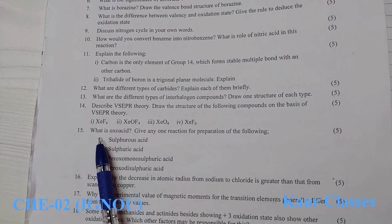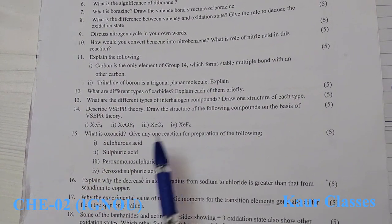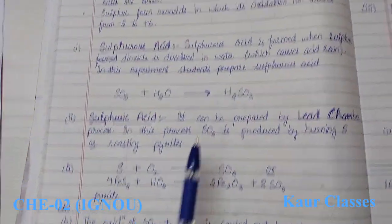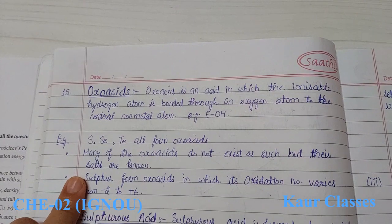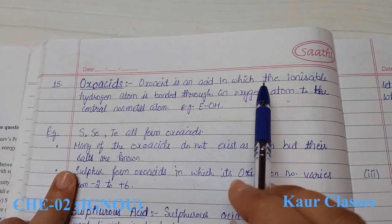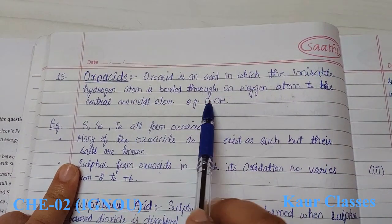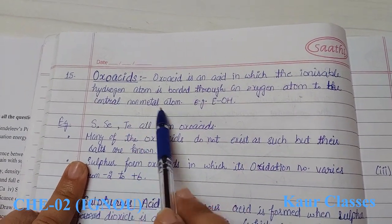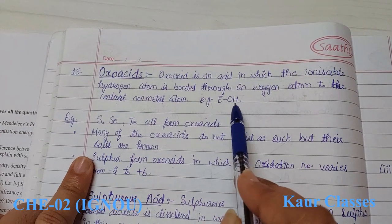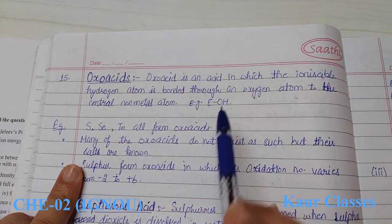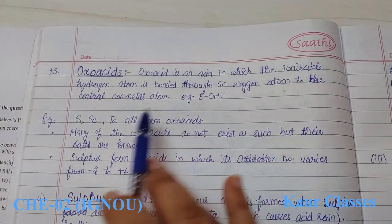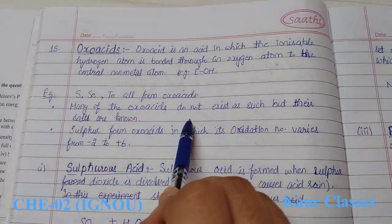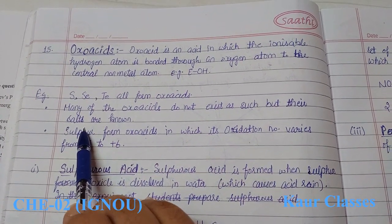Question 15 asks: what is an oxoacid? An oxoacid is an acid in which the ionizable hydrogen is bonded through oxygen to the central non-metal atom. Many of these oxoacids do not exist as such, but their salts do exist. Sulfur forms oxoacids in which the oxidation number varies from −2 to +6.